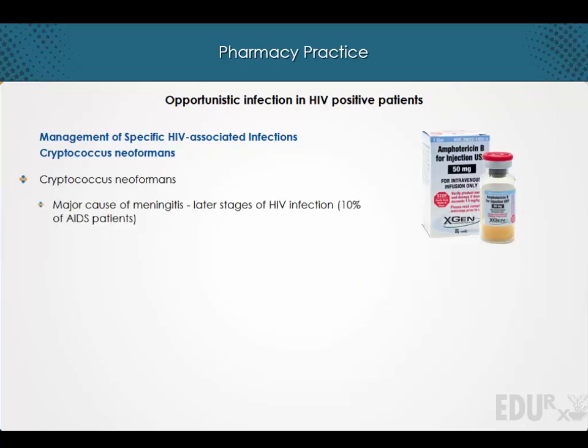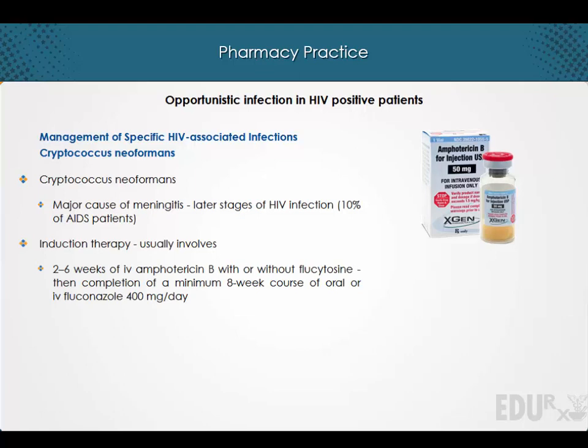Cryptococcus neoformans is a major cause of meningitis in the later stages of HIV infection. Induction therapy usually involves two to six weeks of intravenous amphotericin B with or without flucytosine, followed by completion of a minimum eight-week course of oral or intravenous fluconazole 400 mg per day.